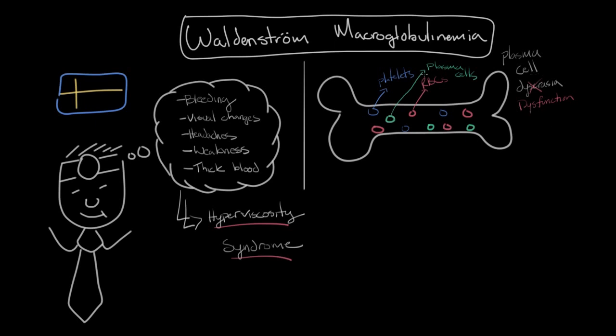So normally these precursor cells make plasma cells. And then plasma cells make antibodies, which I'll just draw in here. Now antibodies are also known as immunoglobulins. And I'm going to just abbreviate that IG. IG for immunoglobulins.